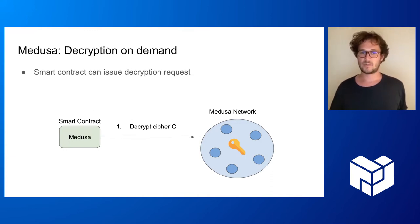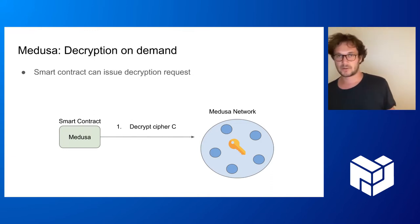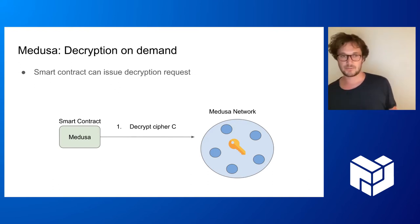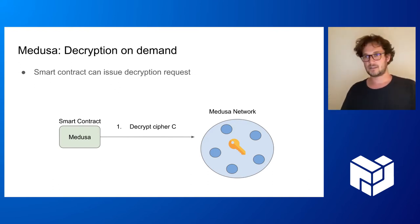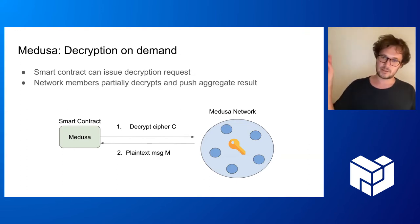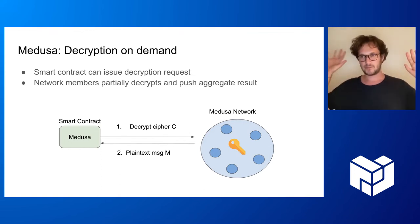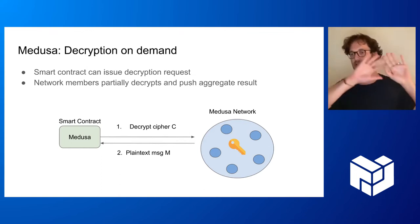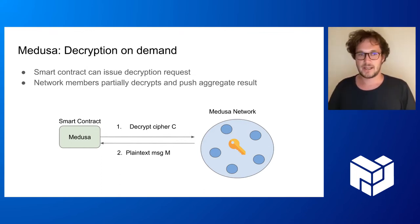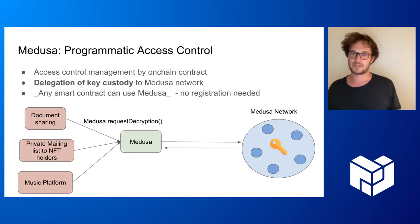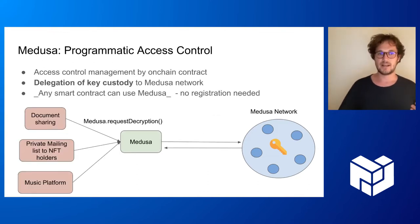When you integrate this design into the blockchain mindset, you get this oracle-like design, similar to Chainlink as we know it. When the smart contract wants to perform an operation with a private key — for example, decrypt something — it can issue a decryption request to the Medusa network, and the Medusa network will decrypt it and push the plaintext back on-chain. You really have to think of Medusa as an extension of the smart contract.